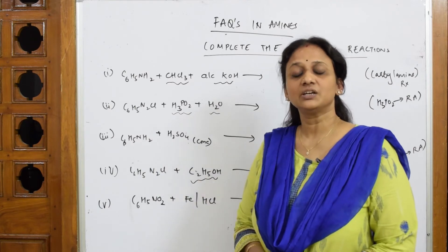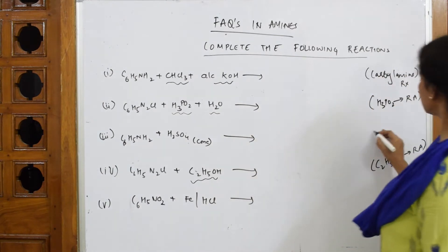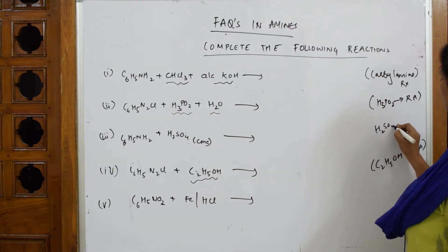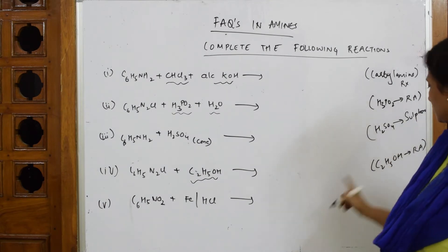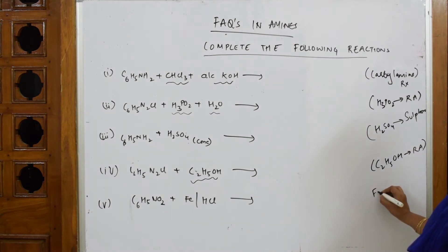Let us come back. What is concentrated sulfuric acid used for? Where is it used? It is used in sulfonation of aniline. Remember, we have done sulfonation step-by-step reactions. So sulfuric acid is used for sulfonation.